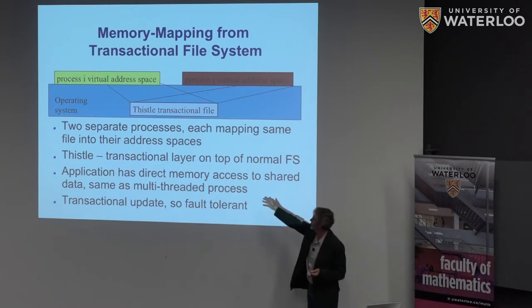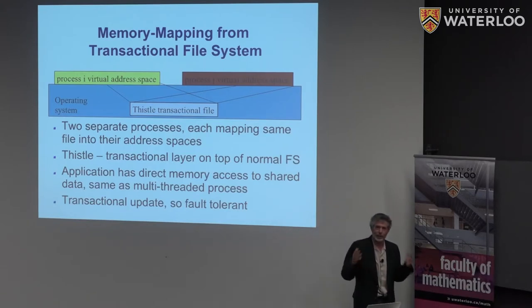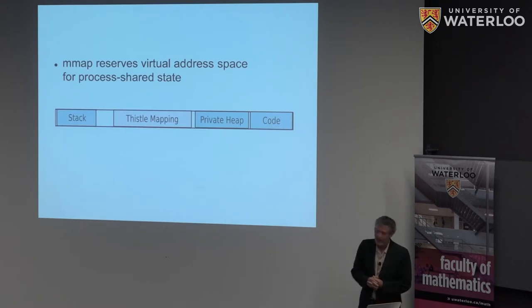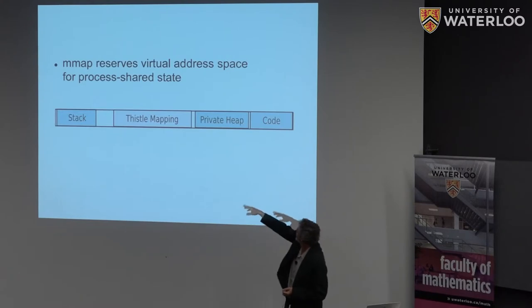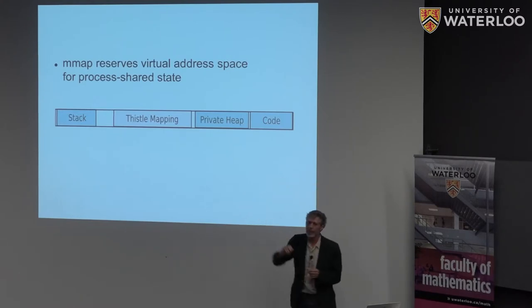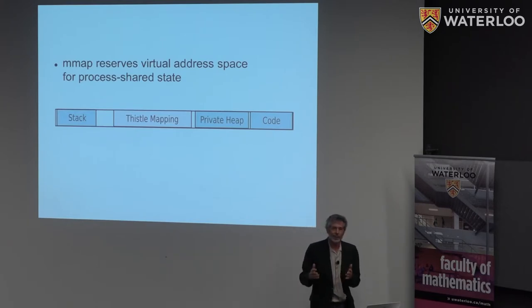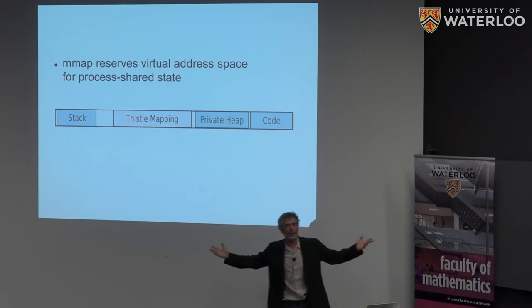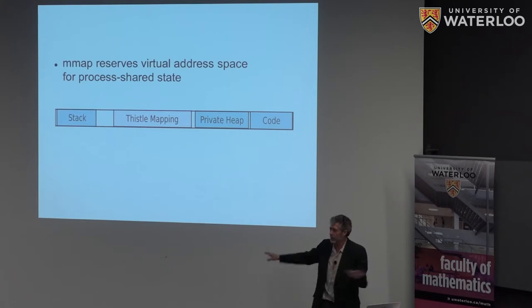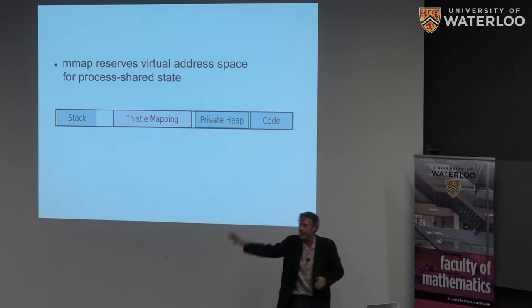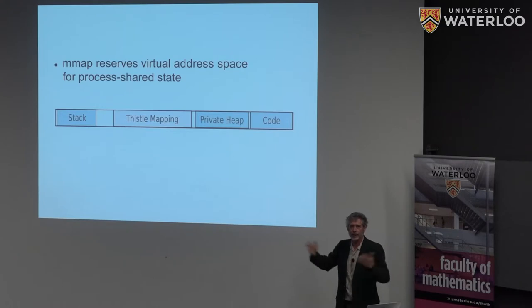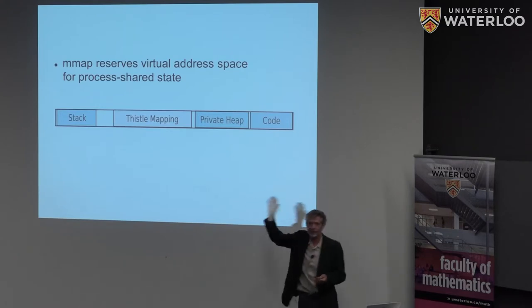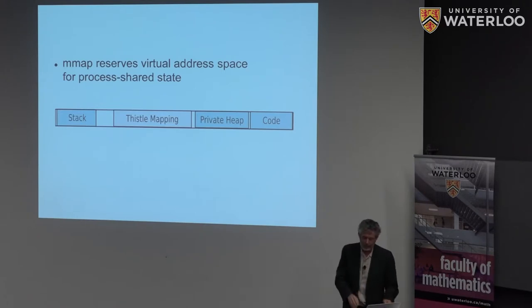We add a Thistle layer on top of the normal file system — a transactional layer built on top of existing Linux file systems. There's a whole ecosystem of file systems we don't want to duplicate. We use M-map to give direct access to data running as multiple processes. Critically, we apply transactional semantics only to stuff stored in these special segments — taking the same database thinking — not the entire address space. The hardware transactional memory community has often taken a hardware-centric view requiring the whole memory to be transactional, whereas database people have always been more sensible, treating only committed database state as durable.